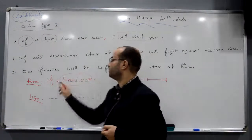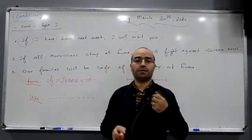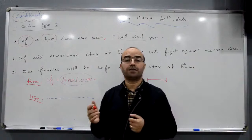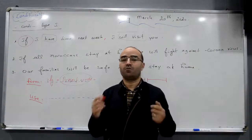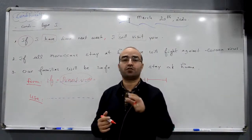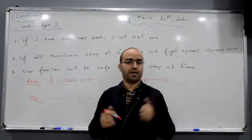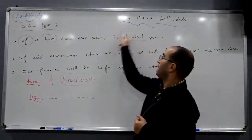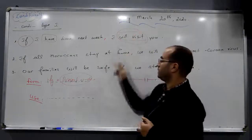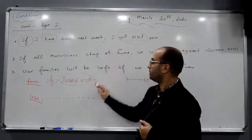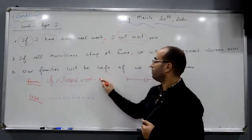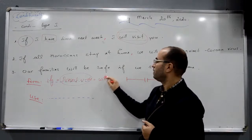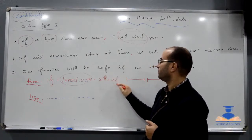What is present simple? I speak, you speak, he speaks. I go, you go, he goes. I do, you do, he does. I work, you work, he works. The verb changes in he and she. This is the present simple. Plus 'will' — 'I will visit' — the second part. Of course, here we have a comma, which means 'plus'. We have 'will' plus the infinitive of the verb.